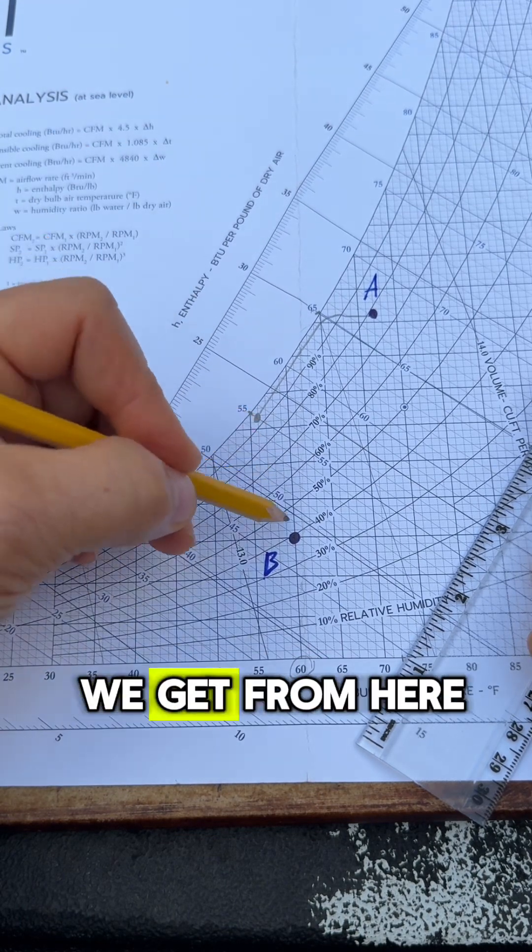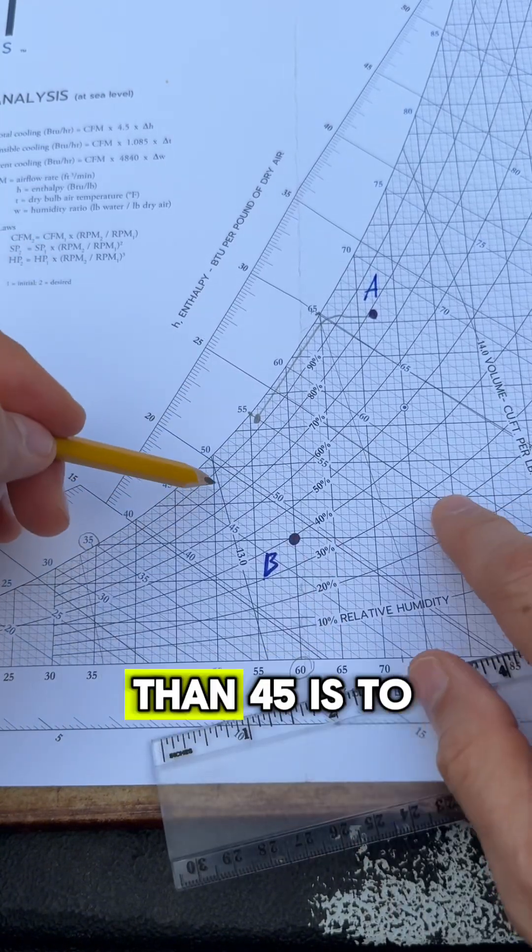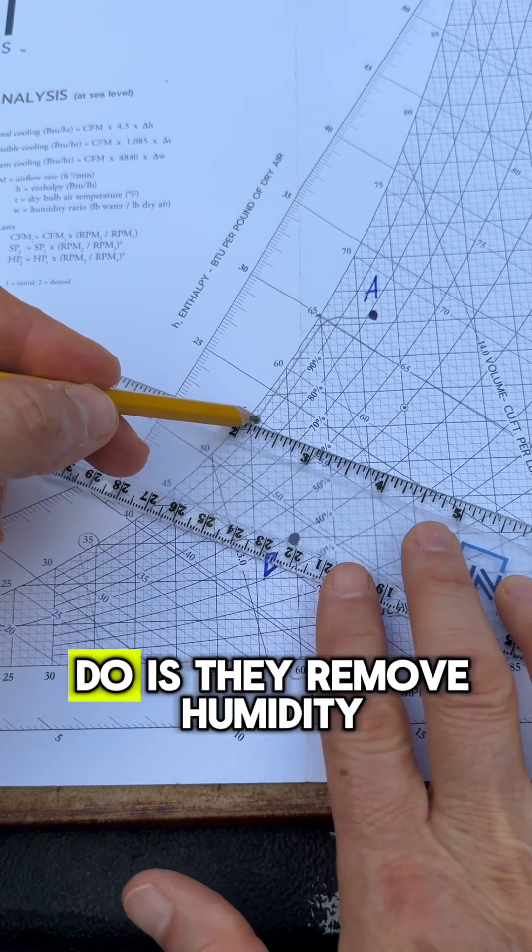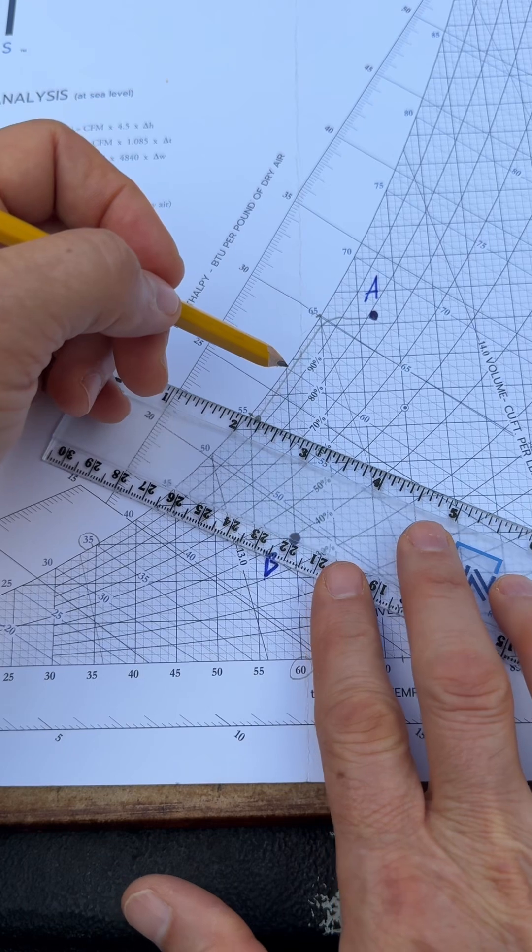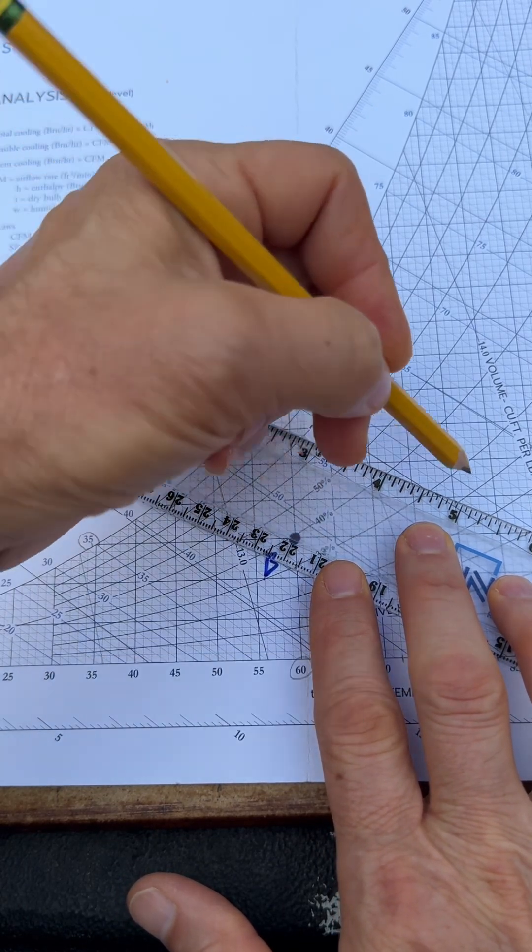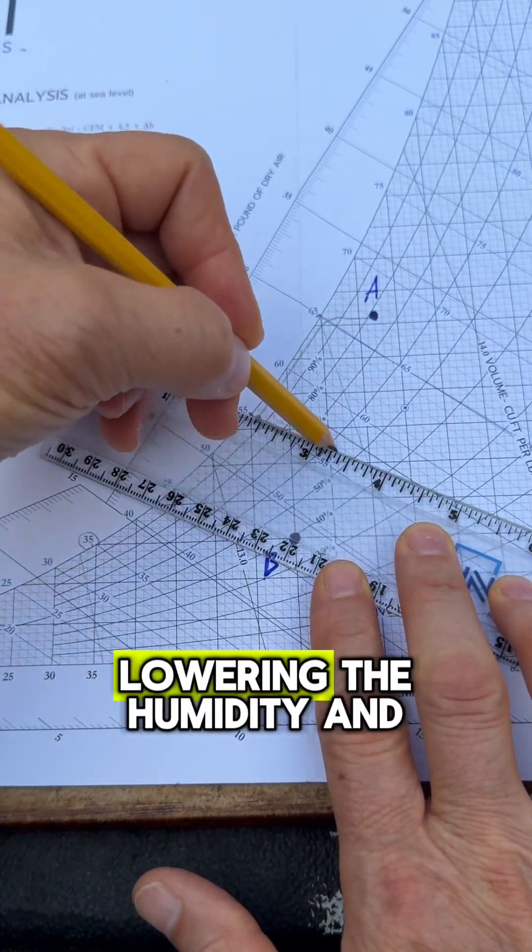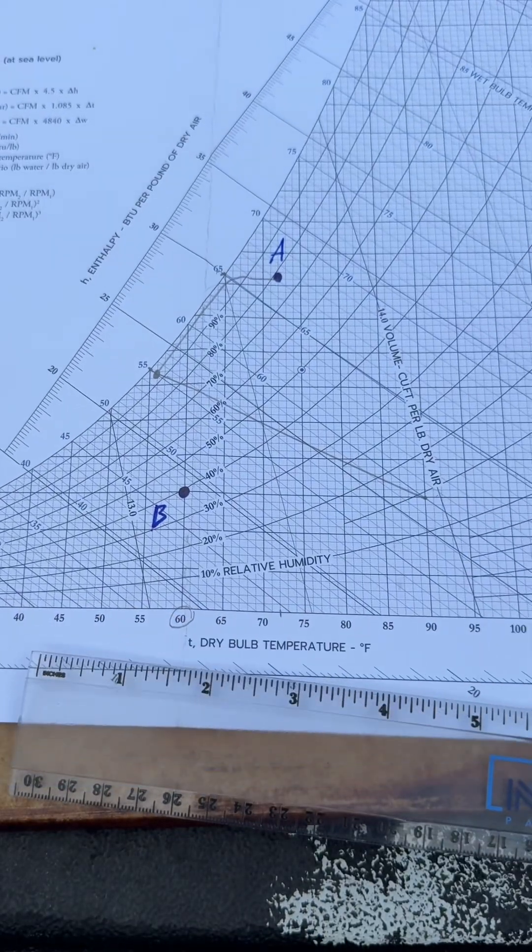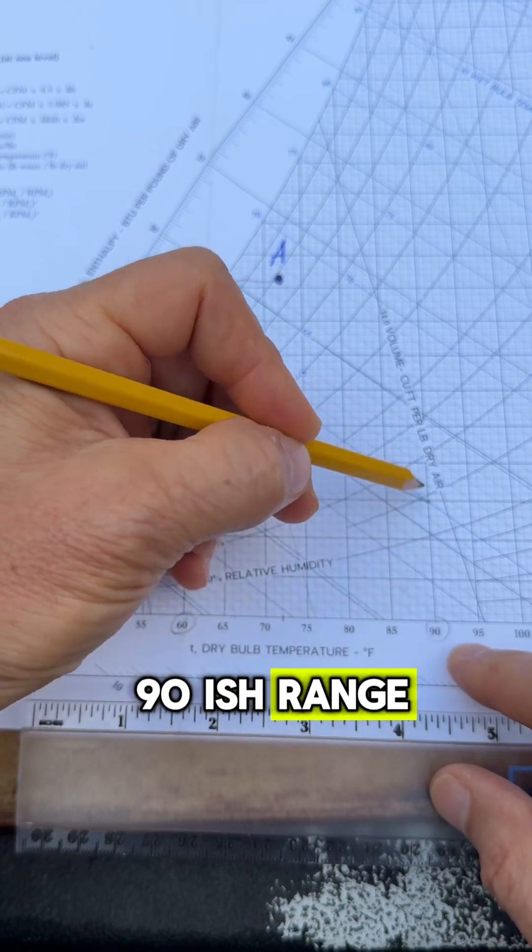So how do we get from here to here? Well, one of my favorite products to get to dew points lower than 45 is to use an active desiccant product. What active desiccants do is they remove humidity, but in doing so they add heat. So the process would look something like this. I haven't run a selection, so I'm not sure exactly where it would end up, but you would be lowering the humidity and adding heat to the system. Somewhere in the 90-ish range, you're going to be leaving the desiccant wheel.